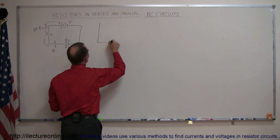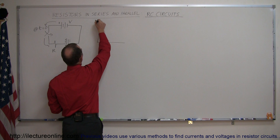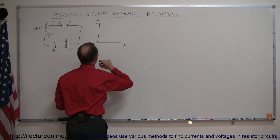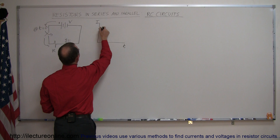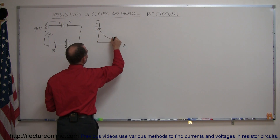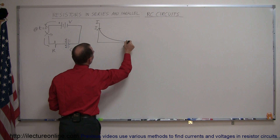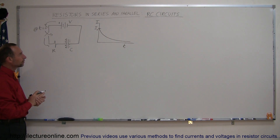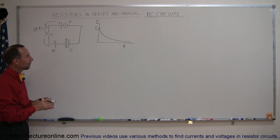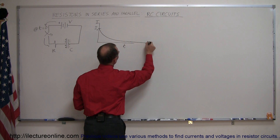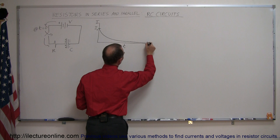If you want to show that graphically — what is the current i as a function of time t in a circuit like that — initially i will be fairly large, you'll start at some initial value, and then drop off exponentially. So over time, eventually the current will drop down to zero when enough time has elapsed.